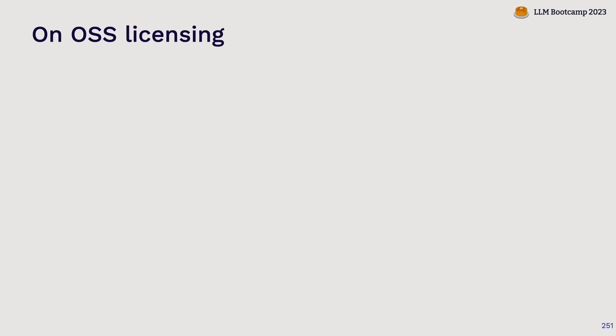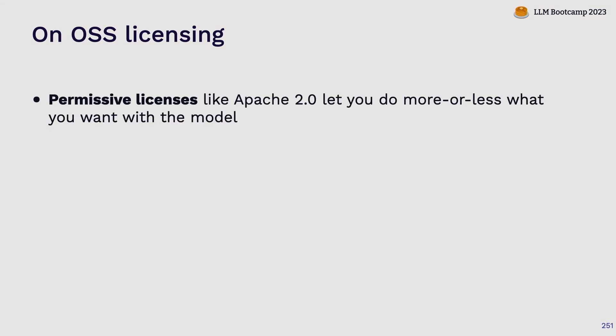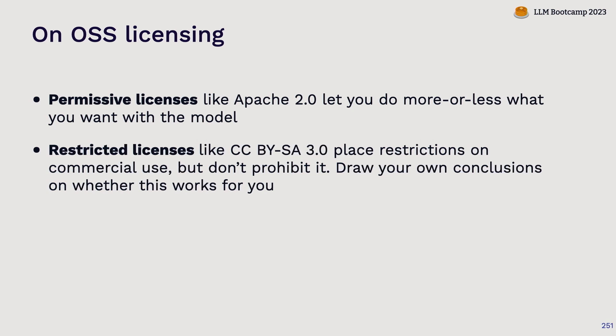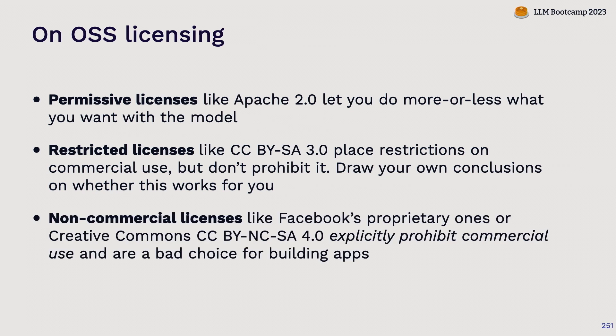One important thing to know in the LLM field — as boring as it seems — is open source licensing. Typically when we think of open source, our mental model is that it's free code we can use for anything. Some models operate that way under licenses like Apache 2. But you do have to be careful in the open source model world because there are also a lot of models released under restricted or non-commercial licenses where they either explicitly prohibit commercial use, or the terms are ambiguous about whether commercial use is allowed. In the open source LLM world, a lot of people want to say they're open source even if they're doing something that is not actually open source.